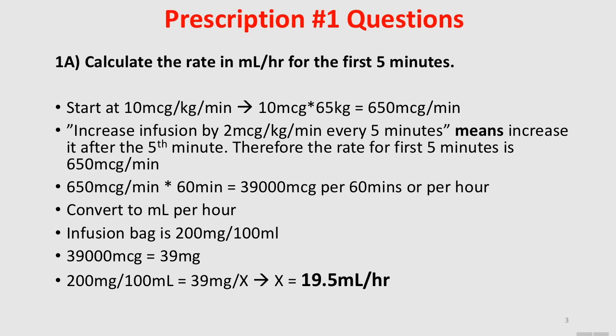The question asks for the answer in mL per hour. So 650 mcg per minute over 60 minutes is 39,000 mcg per hour. You convert that to mL per hour using the concentration of the IV bag — 200 mg in 100 mL. Since 39,000 mcg equals 39 mg, you set up a proportion: 200 mg in 100 mL, 39 mg in X — and you get 19.5 mL per hour.